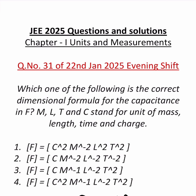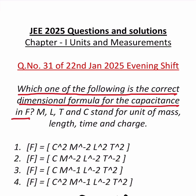Which is also from capacitors. The question goes like this: which one of the following is the correct dimensional formula for the capacitance in F? M, L, T and C stand for unit of mass, length, time and charge. And they have given four options and you have to select from one of these options.